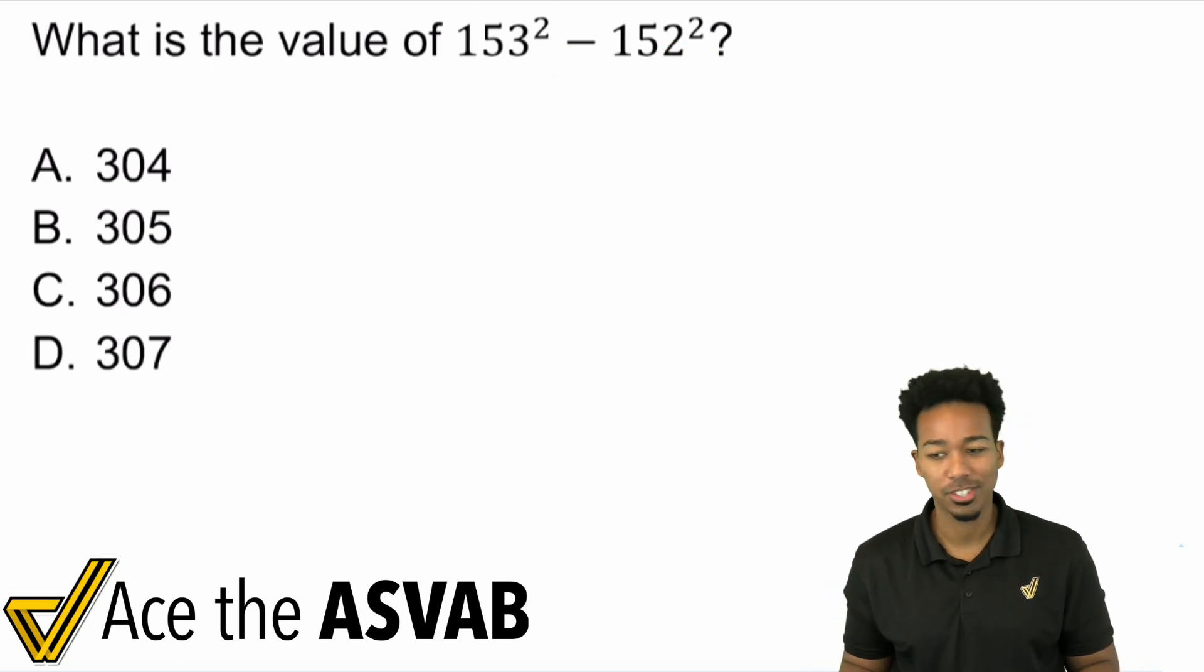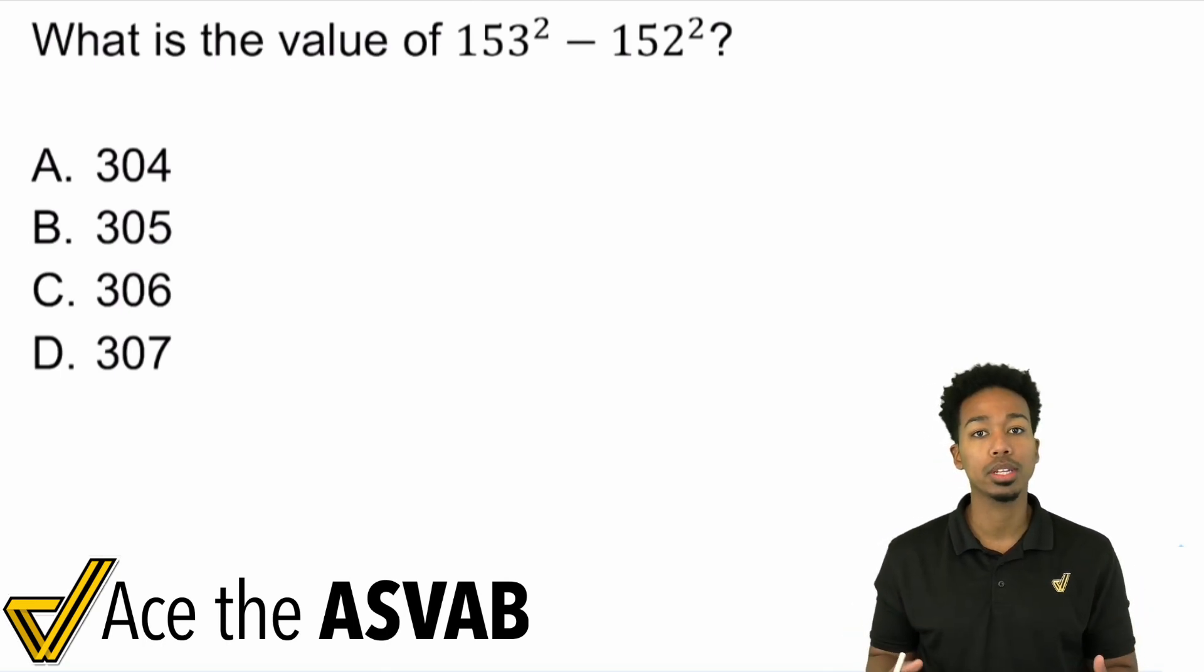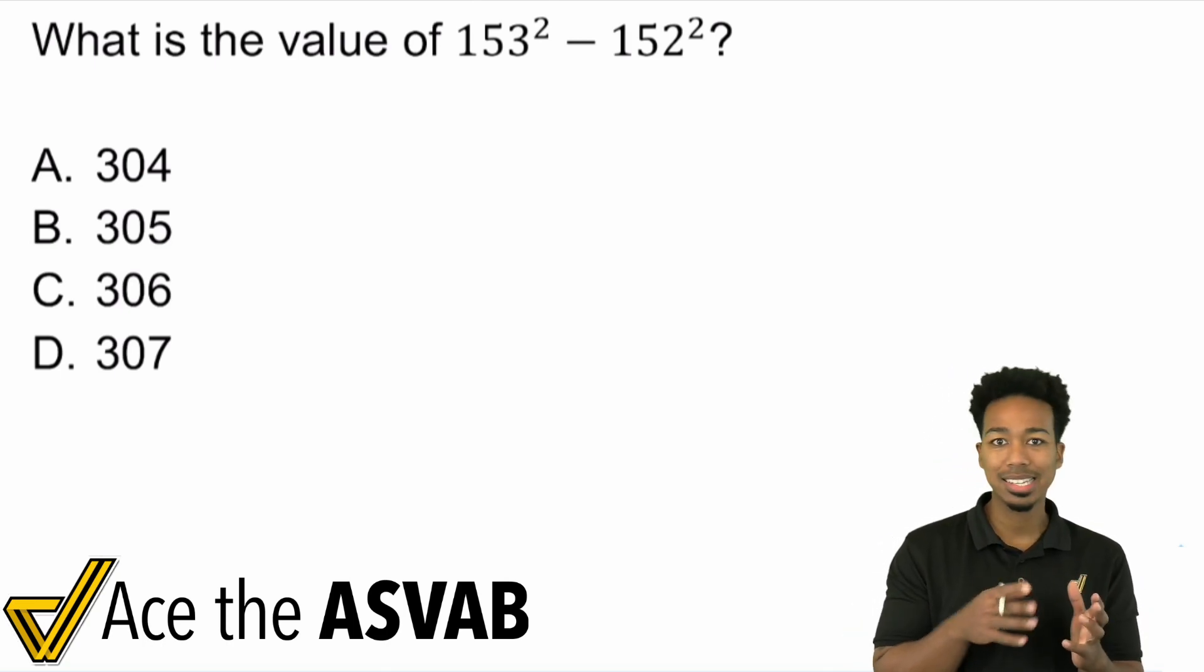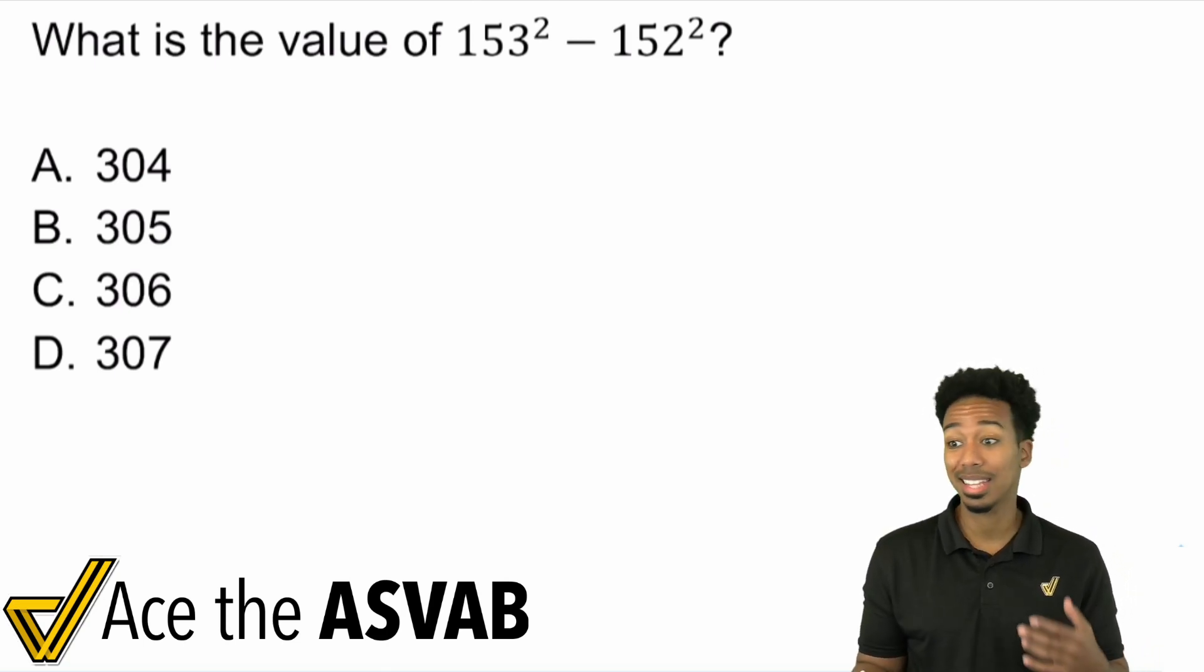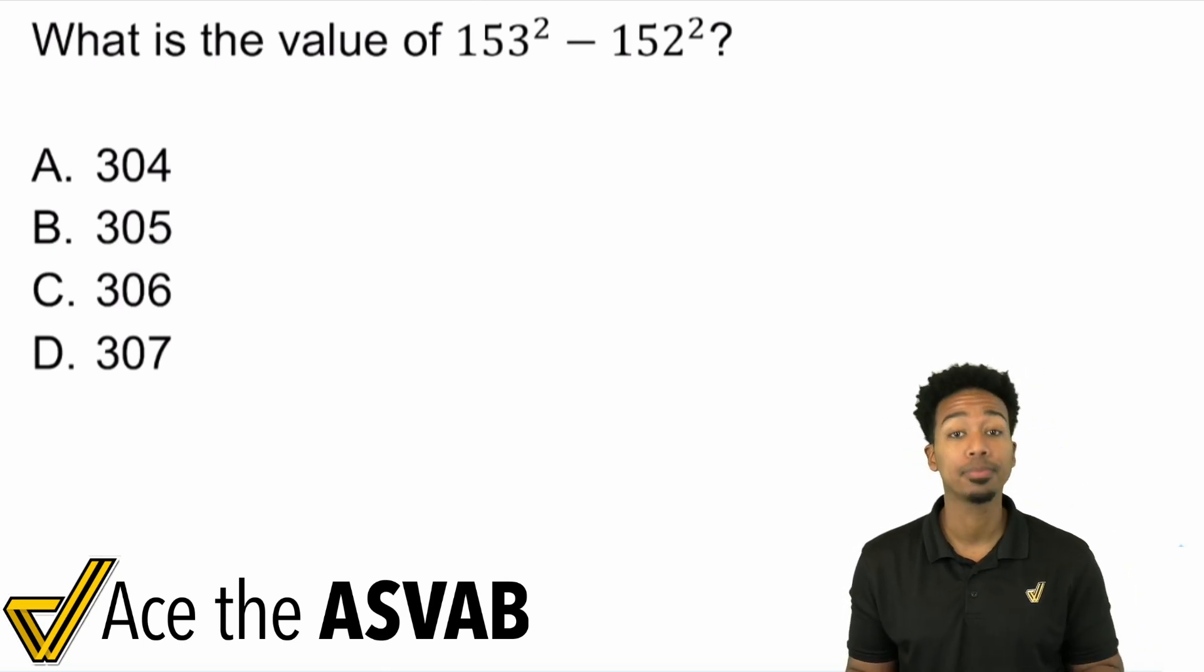So when you take a look at a problem like this, you're going to have one of two different reactions. And this is what's going to make the difference between someone who scores, you know, passing to about 55, 60 versus someone who's getting that 75 to 99. This is the clear difference.